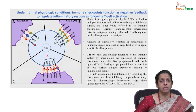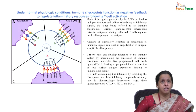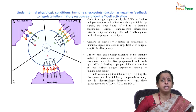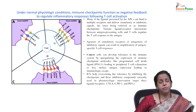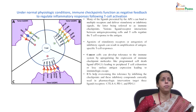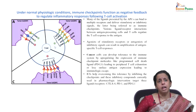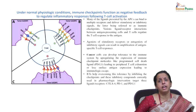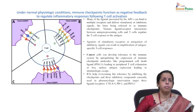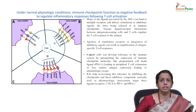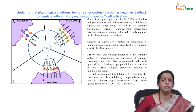Antagonists of stimulatory signals, or those which are inhibitory — antagonists of inhibitory signals — result in a cascade of amplification of specific T cells. Activation of T cells requires two signals delivered by antigen presenting cells. The first signal is the antigen presented as peptides, processed by the major histocompatibility complex (MHC), recognized by T cell receptors — this provides specificity for the T cell response.